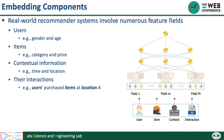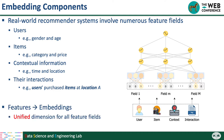In real-world recommended systems, they usually contain hundreds of feature fields. These fields come from users, items, contextual information, and their interactions. Deep recommended systems typically transform these features into embedding vectors. However, in most existing systems, they assign the same embedding dimension to all feature fields. This approach uses the embedding memory inefficiently.